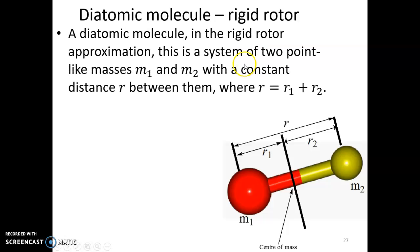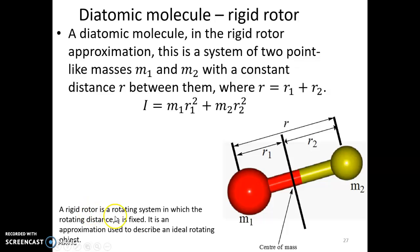We consider the diatomic molecule in the rigid rotor approximation, which means the rotating distance is constant throughout the rotation. A rigid rotor is a rotating system in which the rotating distance ri is fixed — it is an approximation used to describe an ideal rotating object in quantum mechanics, analogous to the ideal gas approximation.